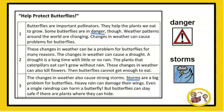These changes in weather can be a problem for butterflies for many reasons. The changes in weather can cause a drought. A drought is a long time with little or no rain. The plants that caterpillars eat can't grow without rain. These changes in weather can also kill flowers. Then, butterflies cannot get enough to eat.